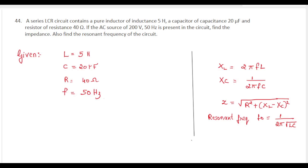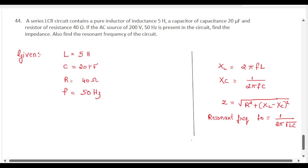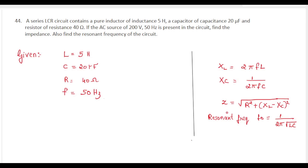We need to find the impedance. To find the impedance we have to use this formula: Z equal to root of R square plus XL minus XC, the whole square. First let us find XL and XC, that is inductive reactance and capacitive reactance.